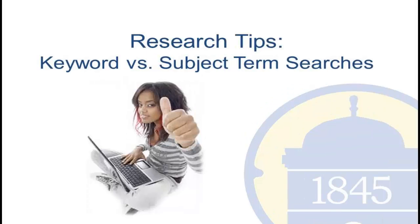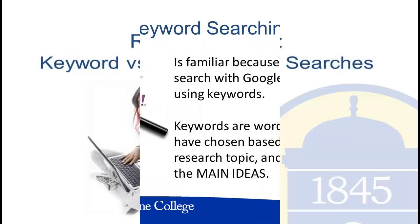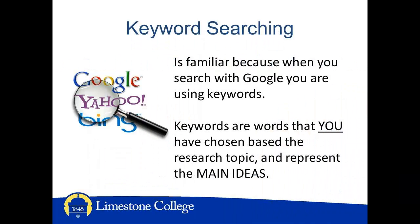This tutorial will examine two types of searches: keywords and subject searches. Keyword searches offer an all-encompassing result list. This will be familiar to you because when you are searching with Google or other search engines you are keyword searching. Keywords are words that you have chosen based on the research topic you selected and represent the main ideas of the topic. Searches using a keyword look in many different places in the record, as you will see shortly.